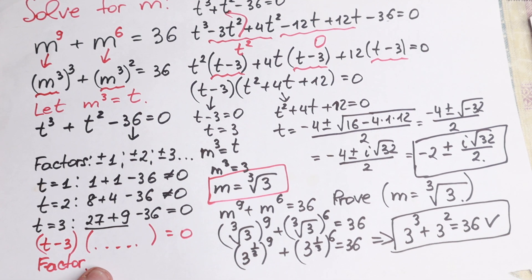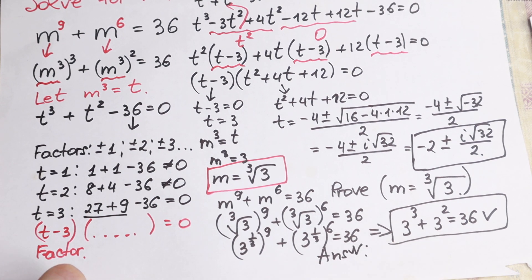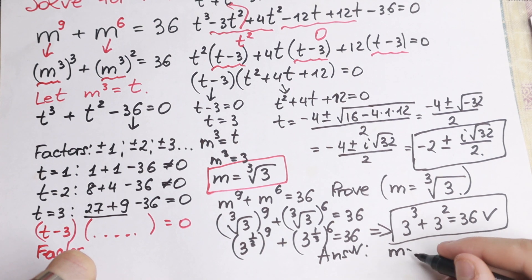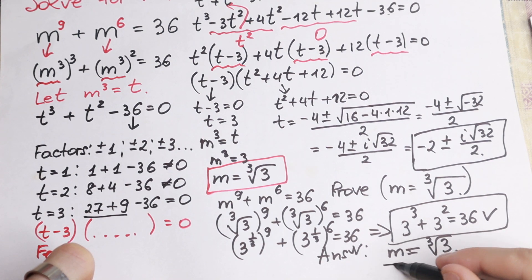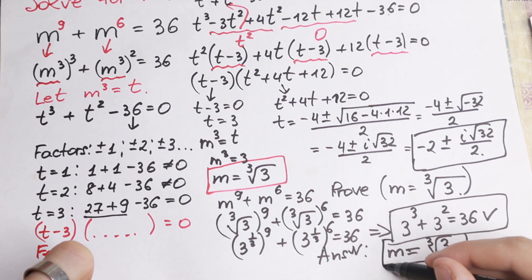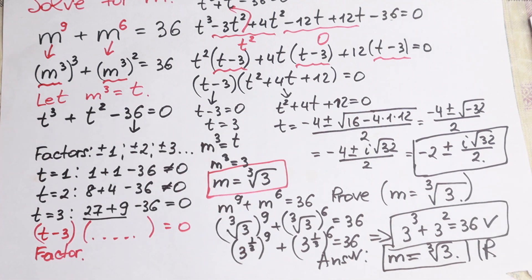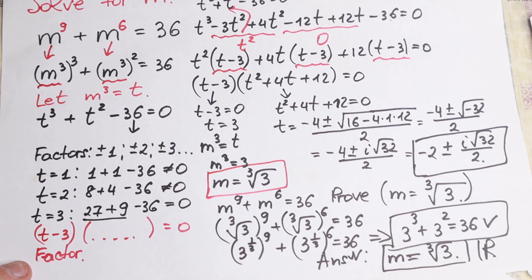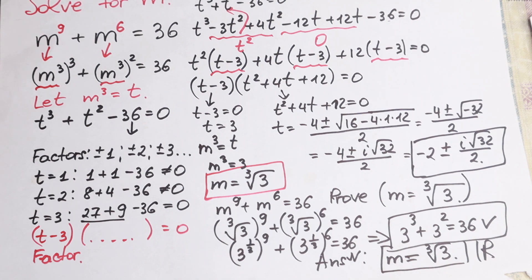So our answer is m equals the cube root of 3. This is our final answer in real numbers. If you're interested in complex numbers, you need to solve the remaining equations — the first with the plus sign and the second with the minus sign. If you still have any questions, write them in the comments, and subscribe for more videos.